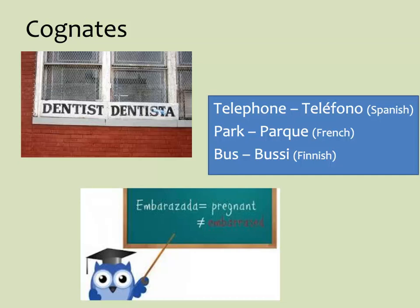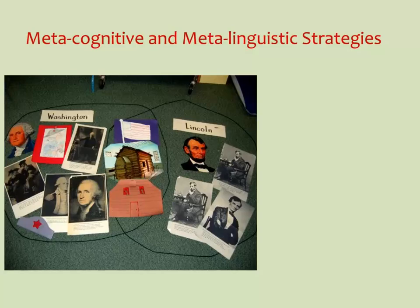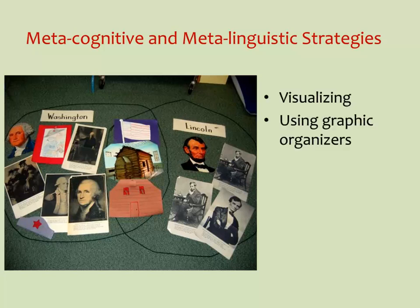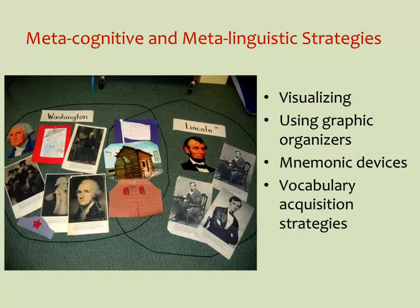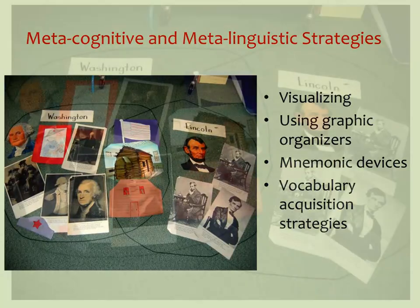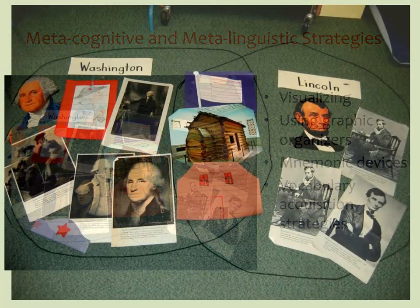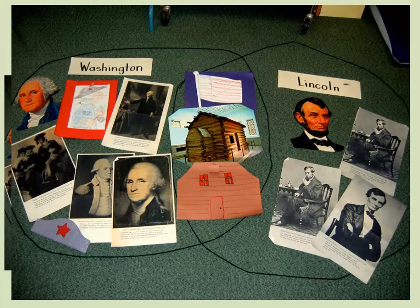Teachers should encourage students to look for cognates. Students can also use what we term metacognitive and metalinguistic strategies to think about, organize, and make use of information. These strategies include, but are not limited to, visualizing, using graphic organizers, mnemonic devices, and vocabulary acquisition strategies. For example, a student who has experience with Venn diagrams for comparing and contrasting two things can transfer knowledge of that organizational strategy into comparing and contrasting in the second language. The strategy itself is transferable across languages.